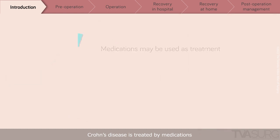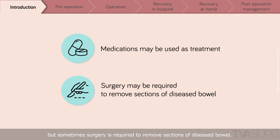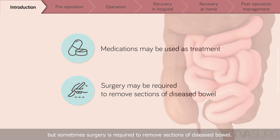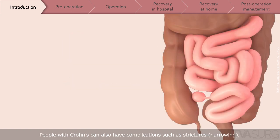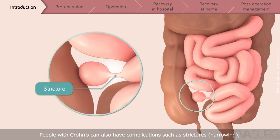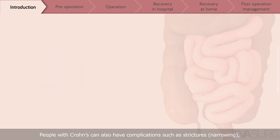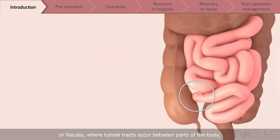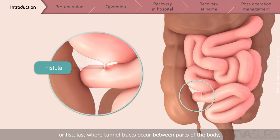Crohn's disease is treated by medications, but sometimes surgery is required to remove sections of diseased bowel. People with Crohn's can also have complications such as strictures, narrowing, or fistulas, where tunnel tracts occur between parts of the body and require surgery to be removed.